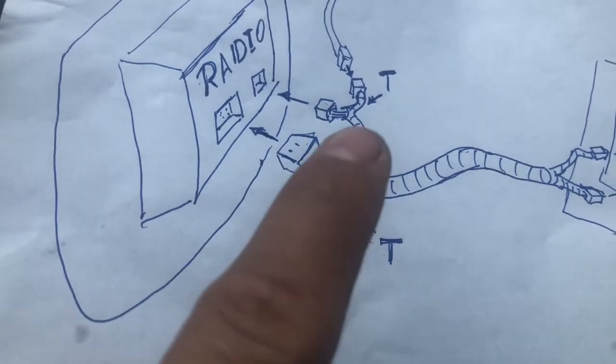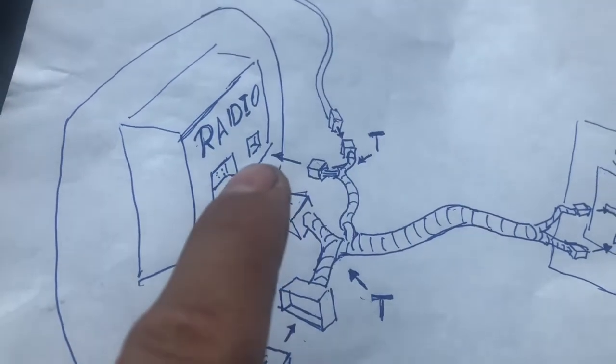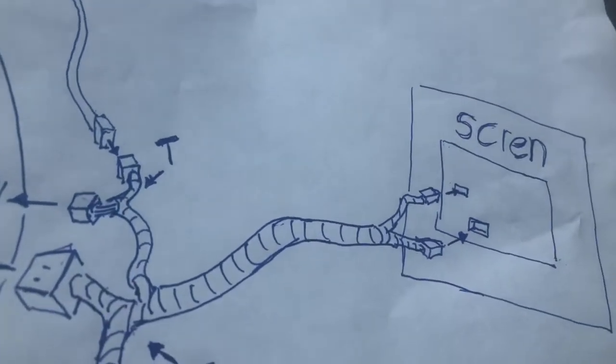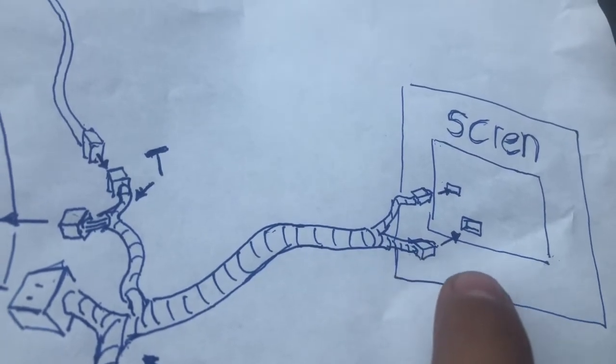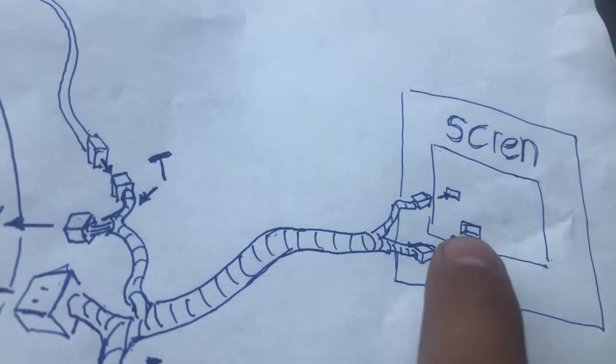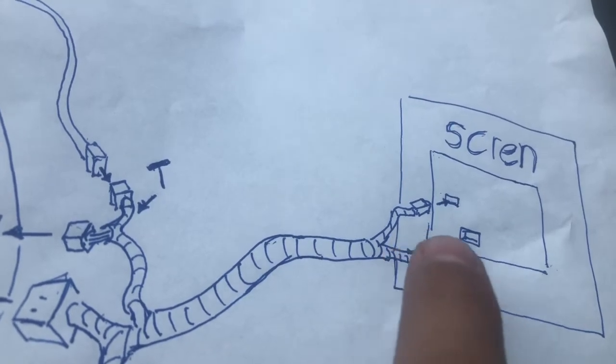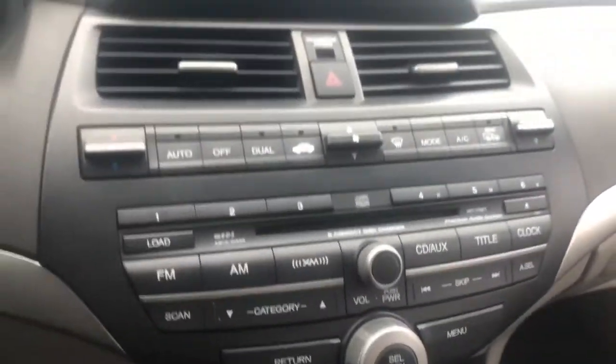The T harness is for the sound. On the screen you're going to have to connect those two - the power for the screen and the sound for the auxiliary to work. That's the way the sound goes through the radio.